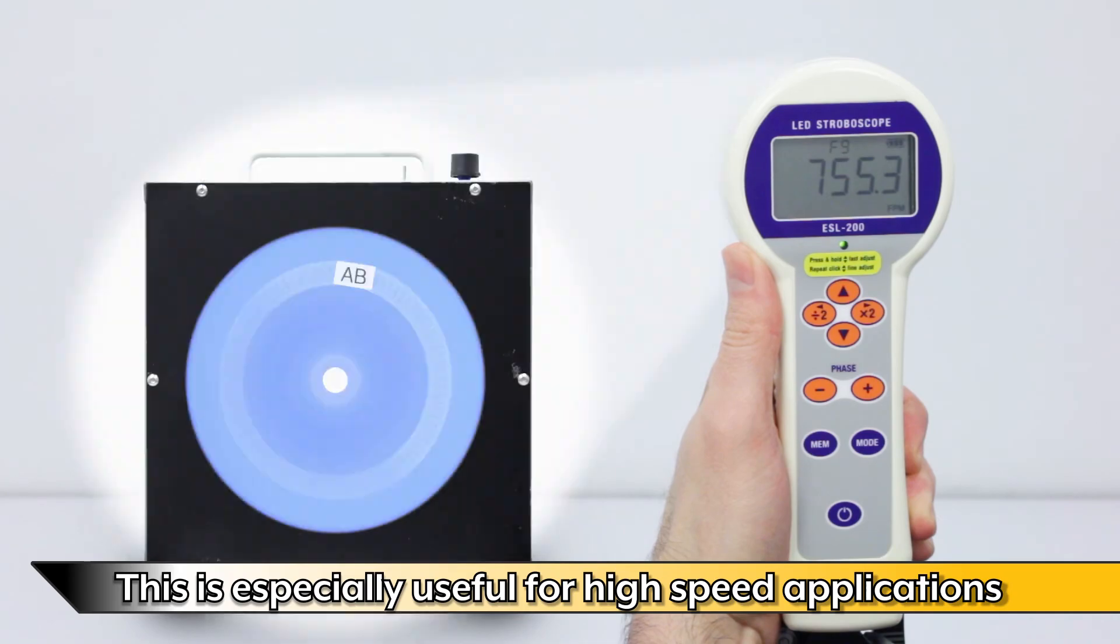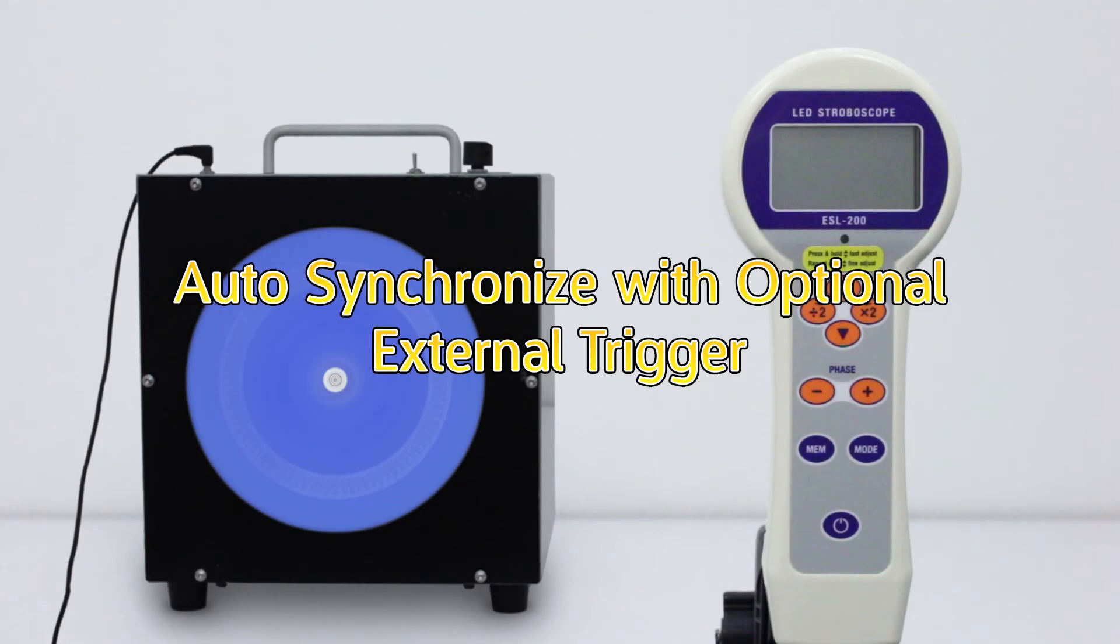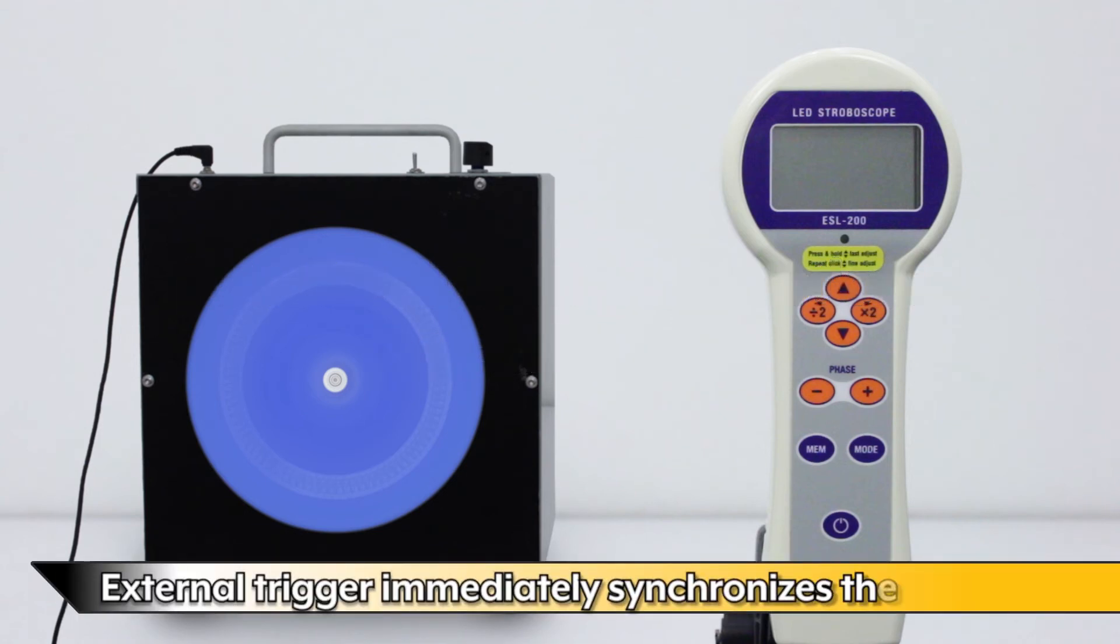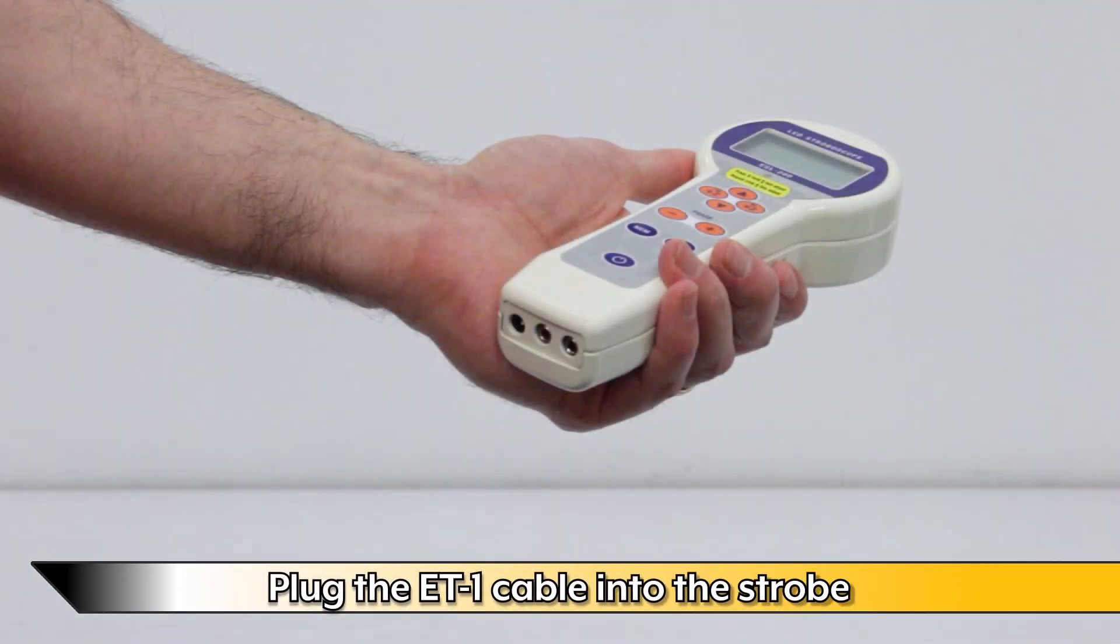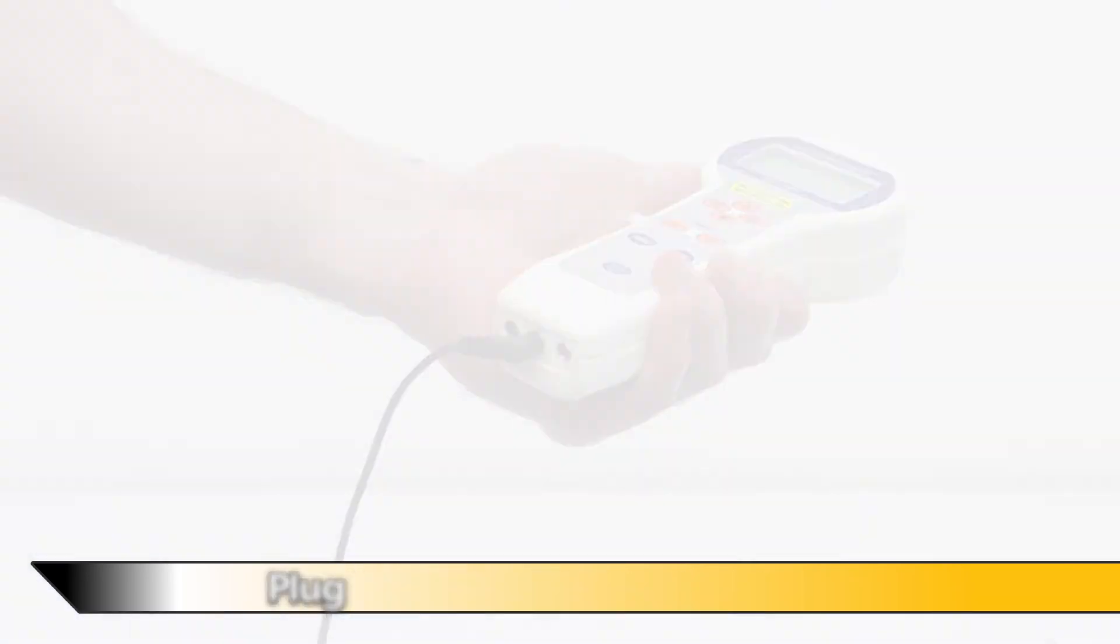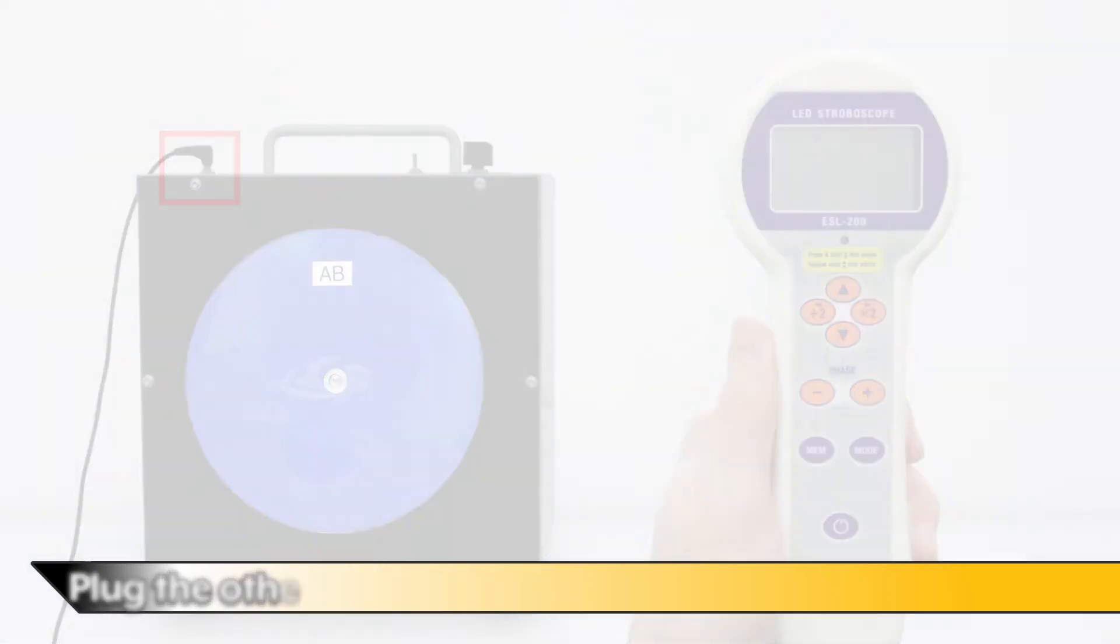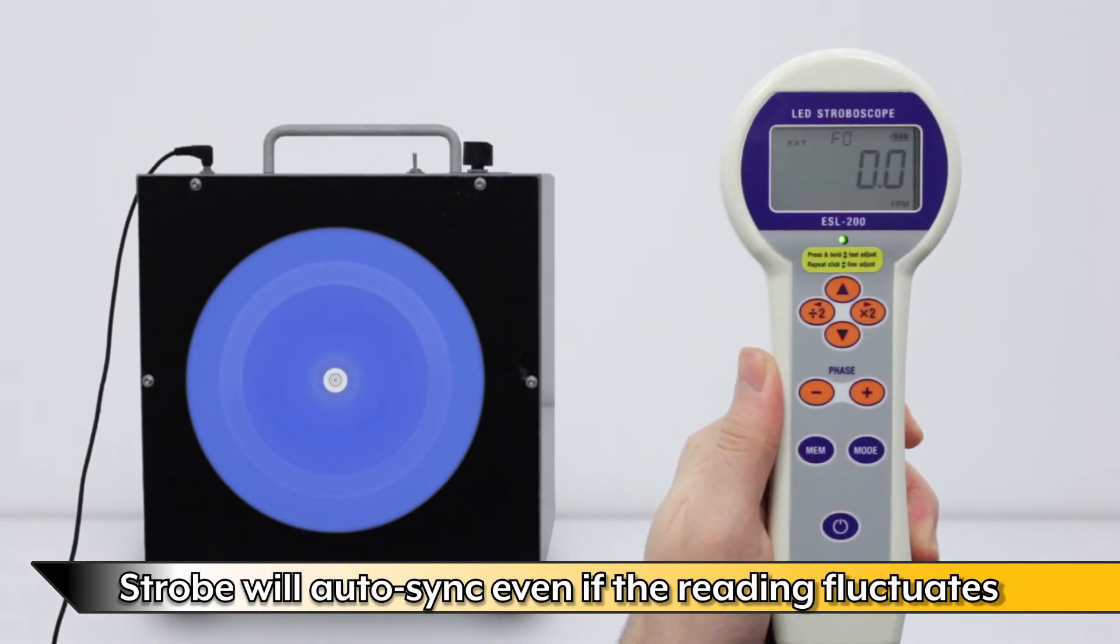Auto synchronize with the optional external trigger. The external trigger immediately synchronizes the stroboscope. Plug the ET1 cable into the stroboscope, then plug the other end into the sensor mounted to the target. The stroboscope will automatically synchronize even if the reading fluctuates.